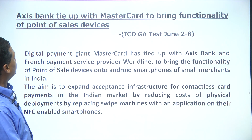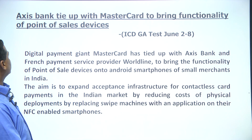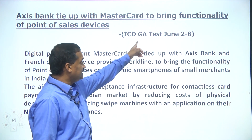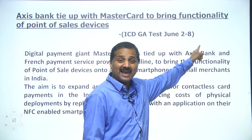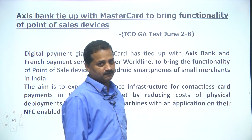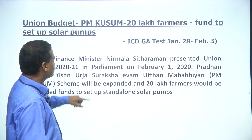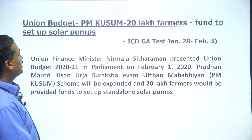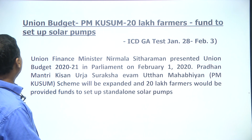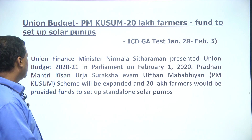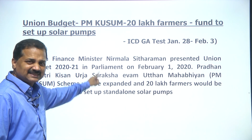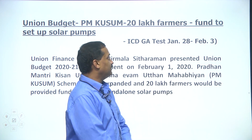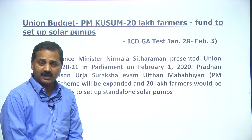Axis Bank ties up with MasterCard to bring functionality of point of sale devices — this was in ICDG test June 28. Union Budget PM Kusum scheme — 20 lakh farmers funded to set up solar pumps. This was from ICDG test January 28–February 3.